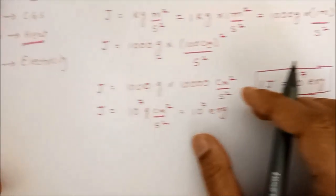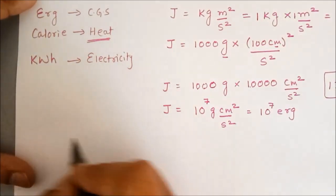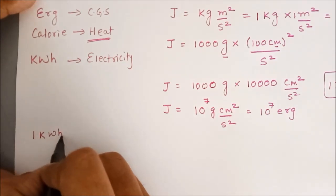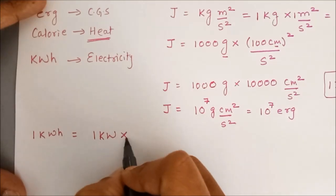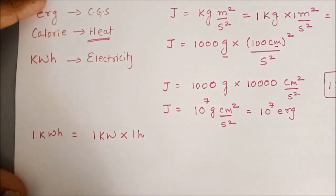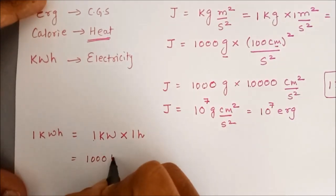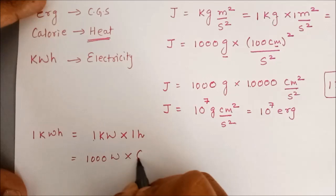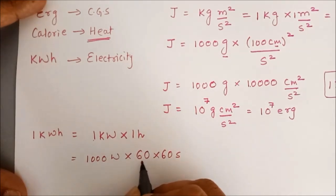Let us also convert kilowatt hour into joule. 1 kilowatt hour can also be broken down into 1 kilowatt into 1 hour. 1 kilowatt can be, kilo means 1000, so 1 kilowatt means 1000 watt into 1 hour, hour means it is 60 minutes and multiply by 60 second. So, 1 hour is 60 into 60 second.